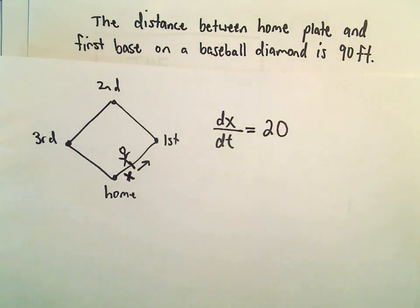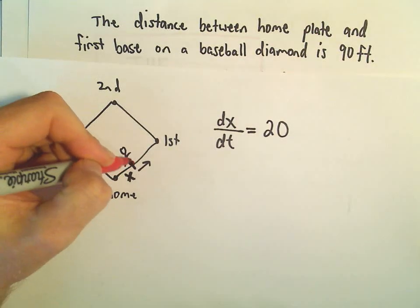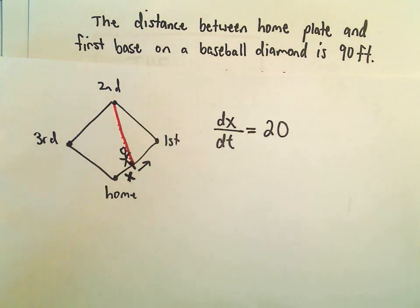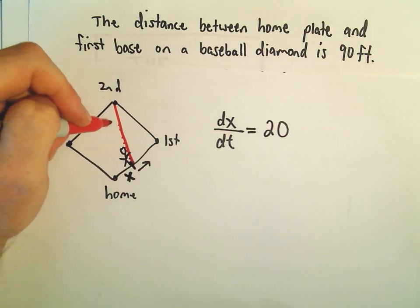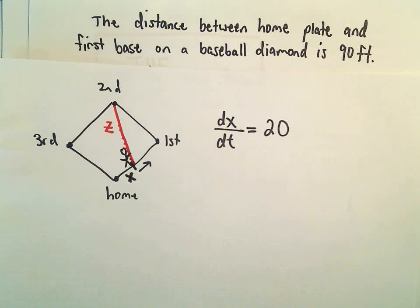And what we're trying to find is, we're thinking about the distance between the baseball player and second base. So that distance is also going to change as time progresses. So I'm going to label that with a z, just some other variable.